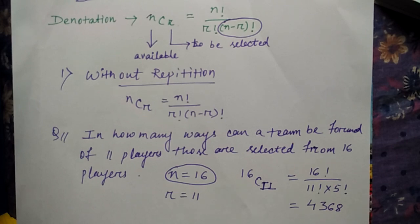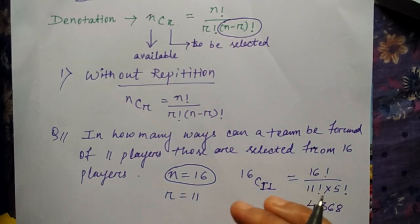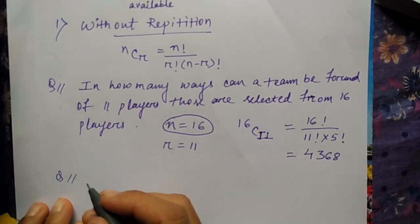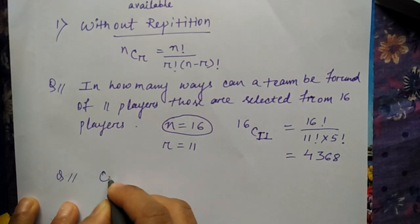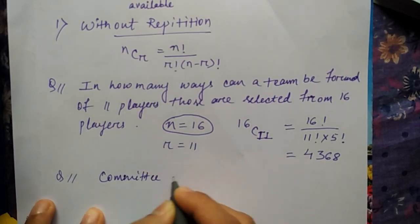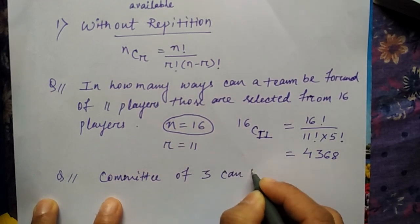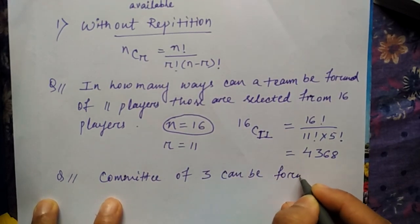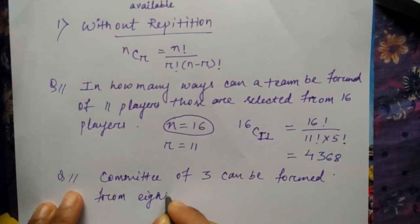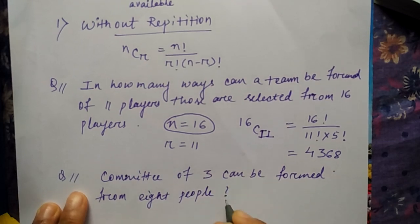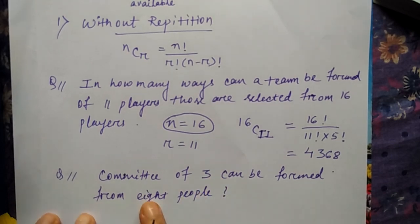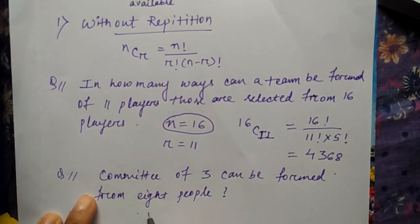Okay, so this is one kind of question. Let me say one more question: how many committees of three can be formed from eight people? So this is like you want to make a committee of three people from eight people, so availability is eight.